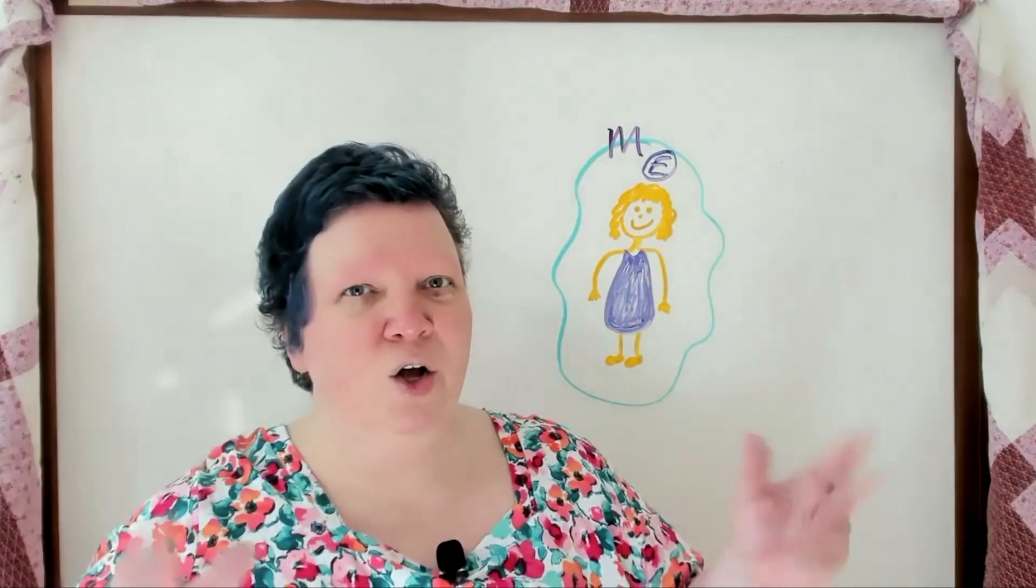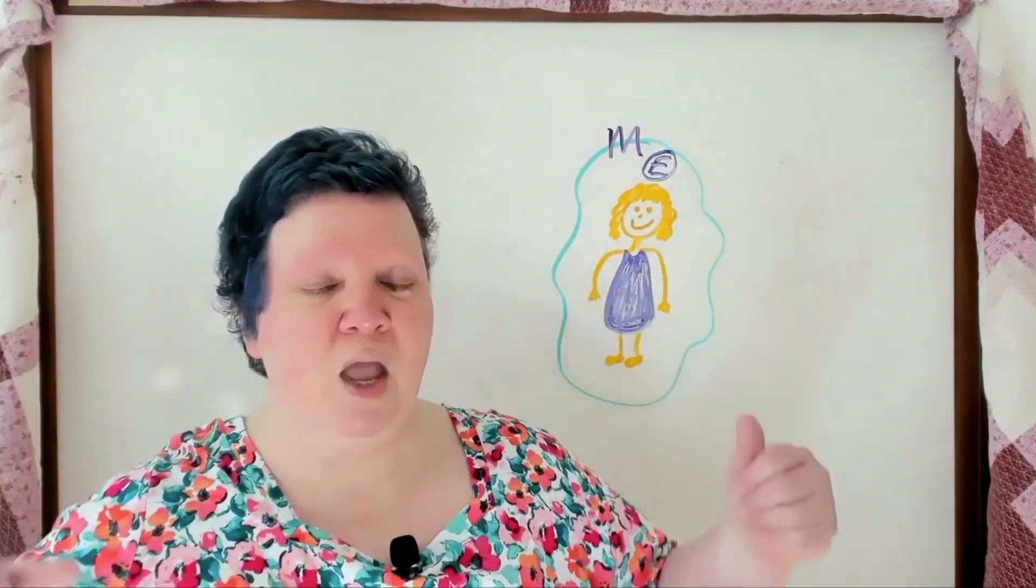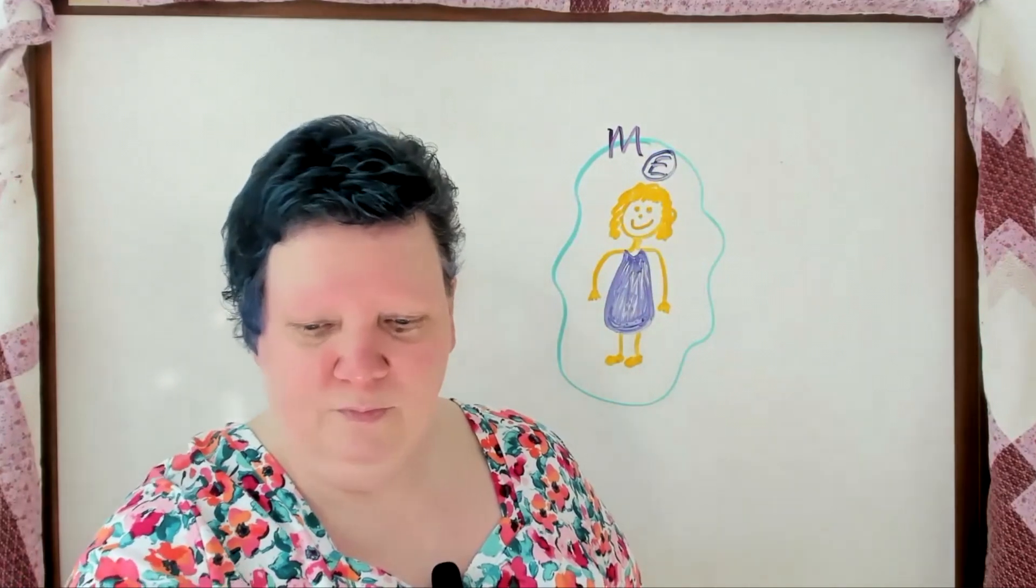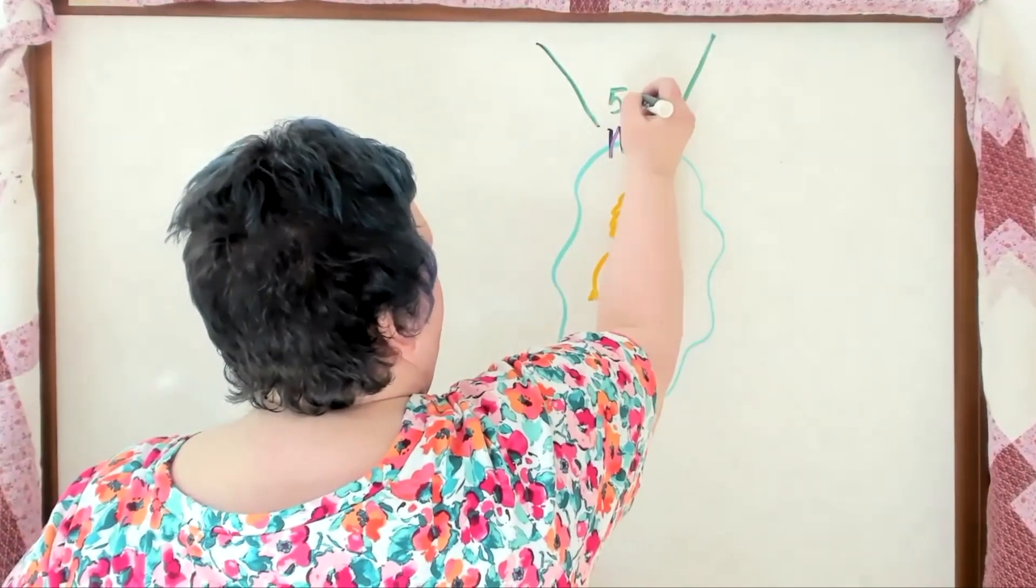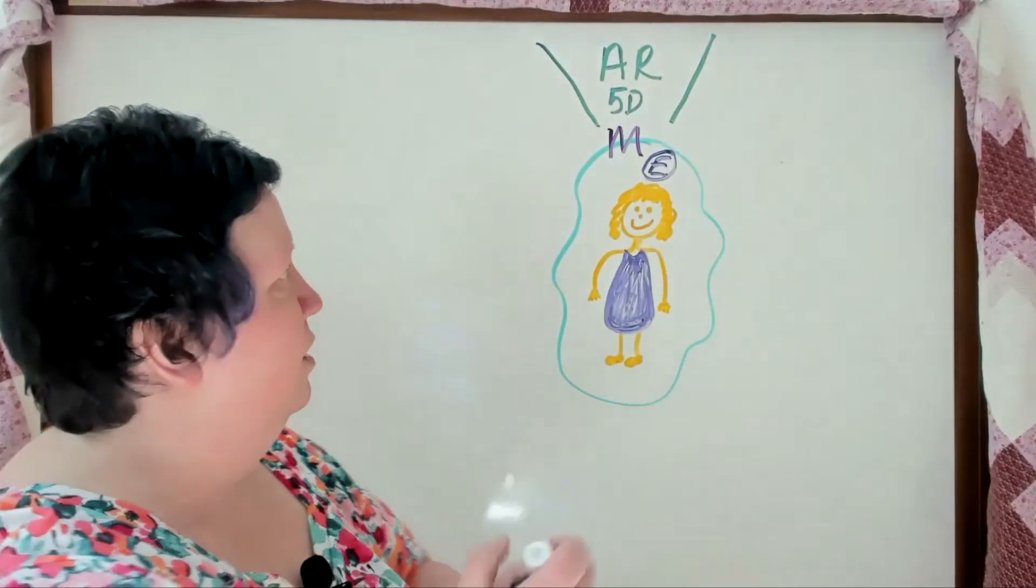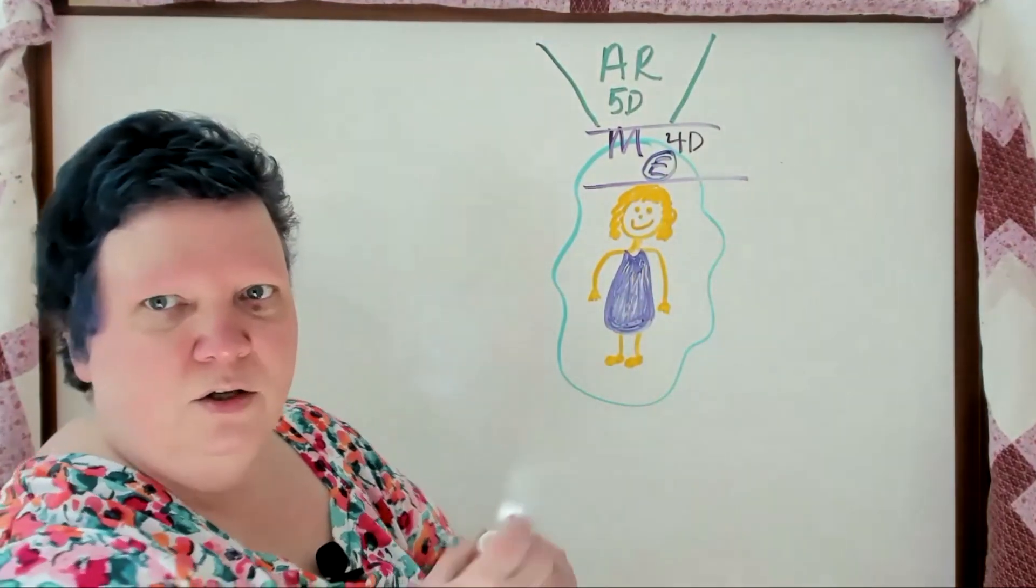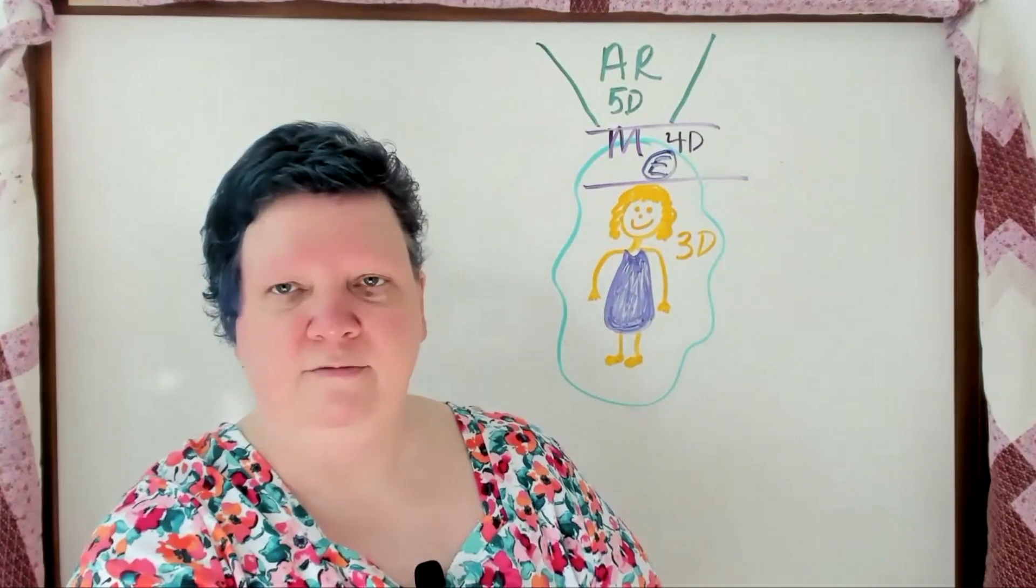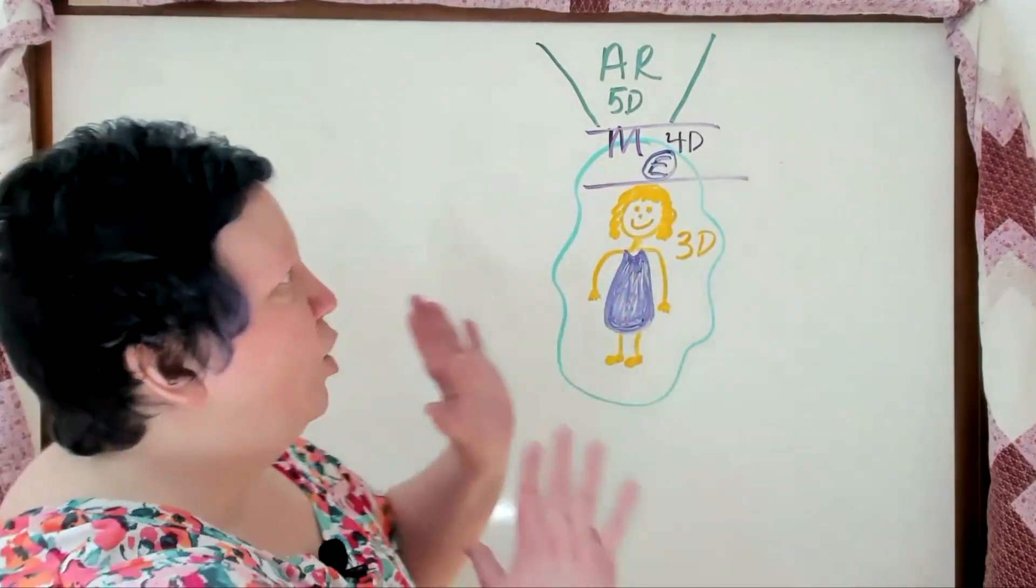So we got our third dimension body. We got our fourth dimension emotional body where we feel, and our mental body where we think. Those are fourth dimension, and then the next dimension is the fifth dimension. And that is where the Akashic Records are. So let me see. I'm going to name this 4D. And then this one is 3D. So 3D, 4D, 5D. So the Akashic Records are in the fifth dimension because they are outside of space and time, and they are connected to our spirit.